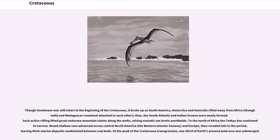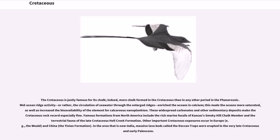Such active rifting lifted great undersea mountain chains along the rifts, raising eustatic sea levels worldwide. To the north of Africa, the Tethys Sea continued to narrow. Broad shallow seas advanced across central North America — the Western Interior Seaway — and Europe, then receded late in the period, leaving thick marine deposits sandwiched between coal beds. At the peak of the Cretaceous transgression, one-third of Earth's present land area was submerged.